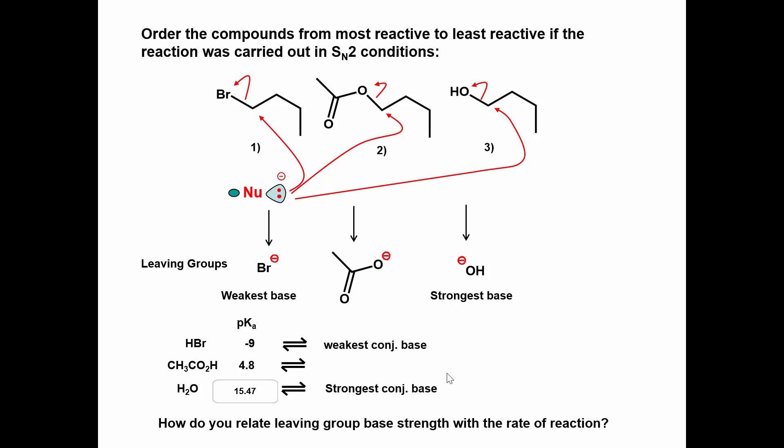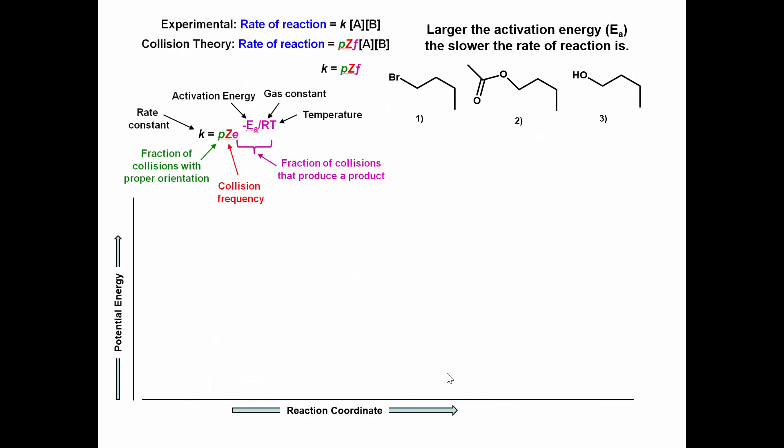How do we relate base strength of the leaving group with the rate of an SN2 reaction? Remember the rate constant in the rate equation is dependent on the activation energy, and the larger the activation energy the slower the reaction rate is.